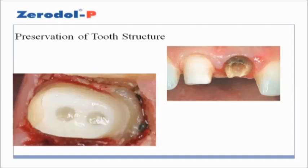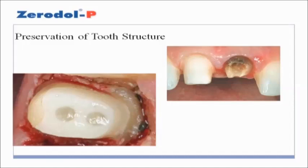Lack of sufficient ferrule forces the post and core to accept high functional forces. Preservation of tooth structure: whenever possible, coronal and radicular tooth structure should be conserved. In most cases, preparation of a post space should require minimal removal of additional radicular dentin beyond the requirements for root canal treatment. Further enlargement only weakens the root.